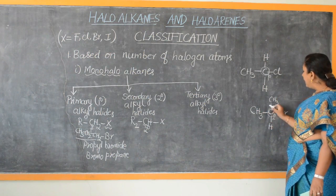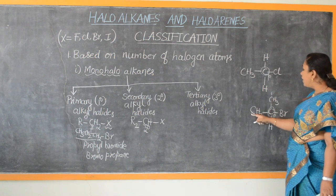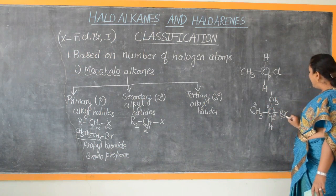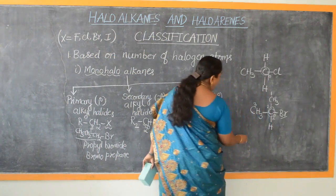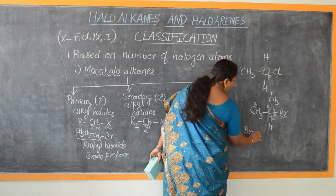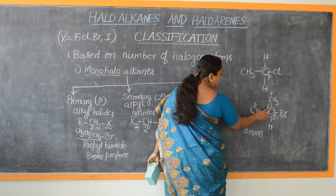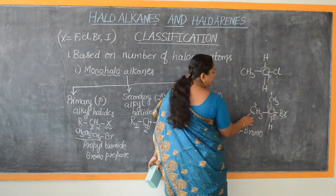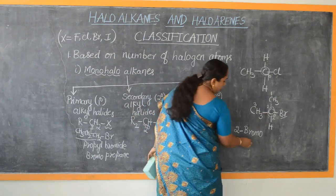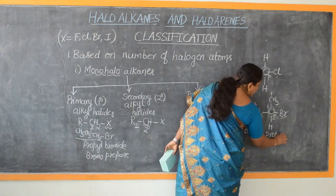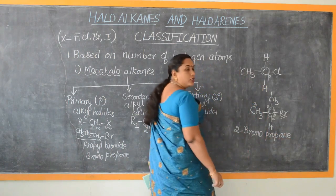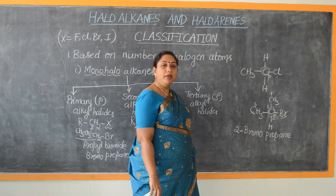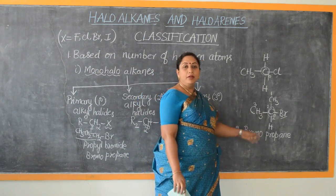Let us name the compound CH3-CHBr-CH3. The parent chain contains three carbon atoms. Numbering gives bromine on carbon 2, so it is 2-bromopropane as its IUPAC nomenclature. Its trivial nomenclature is isopropyl bromide, because it is a branched structure.